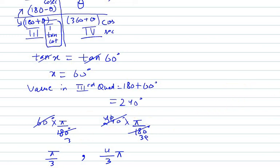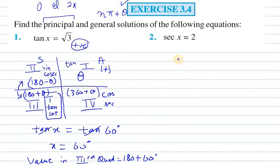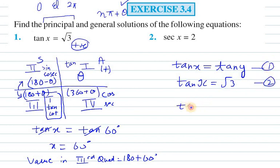The general solution for tan x—what we need to do is take another angle. I will assume that tan x equals tan y, and we know that tan x equals √3. From equations 1 and 2, what we can write is that tan y also equals √3.